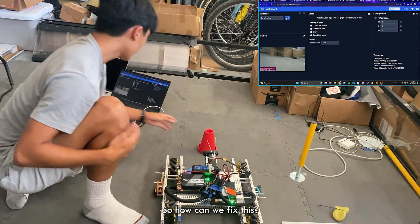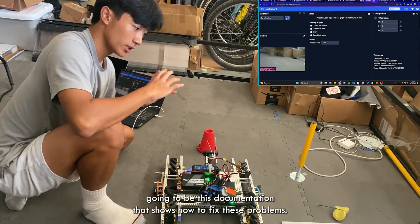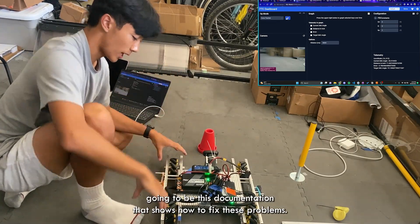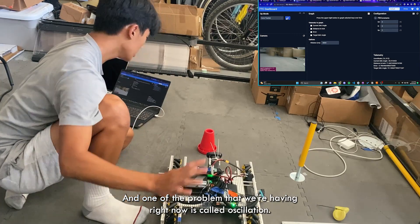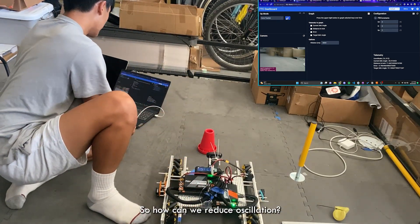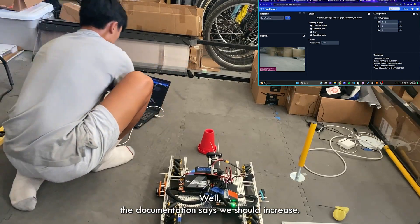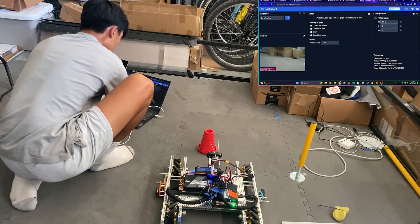So how can we fix this? Well, if you look at the link in the description there's going to be this documentation that shows how to fix these problems. The problem that we're having right now is called oscillation. So how can we reduce oscillation? Well, the documentation says we should increase Kd, so I'm going to do 0.03, and decrease Kp. So I'm going to try this again and let's see the result.